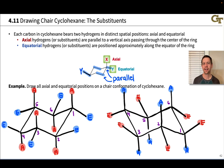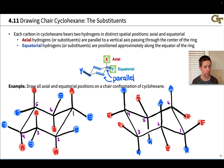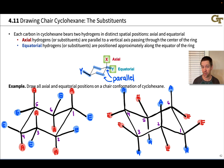Cyclohexane consists of two interconverting chair forms that are conformational isomers, differing via rotations around single bonds. This process that interconverts the two chair forms is called a chair flip. For the parent cyclohexane with no substituents, the two chair forms are equal in energy — perfectly superimposable. But when we introduce a substituent, the two chair forms are most commonly very different because the substituent goes from an axial orientation to an equatorial orientation upon the chair flip.